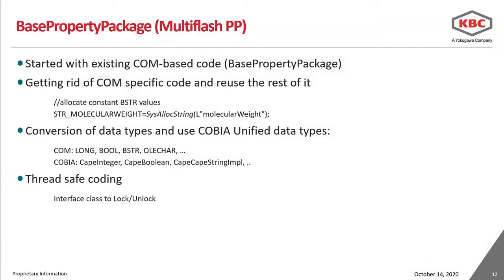For the Motiflash-based property package, we had a legacy COM-based code. I reused parts of the code that were not COM-specific and removed those parts which were COM-specific — such as allocating or deallocating variables, and conversion of COM-specific data types to the COBIA unified data types. I also took care of thread-safing the code using locking and unlocking.